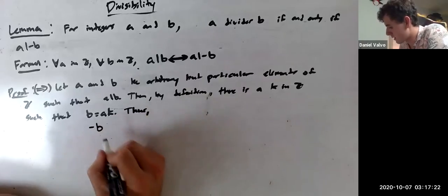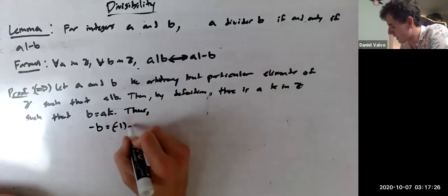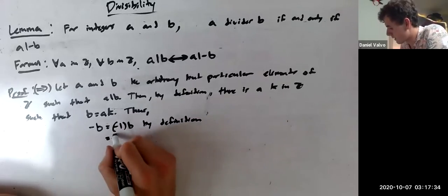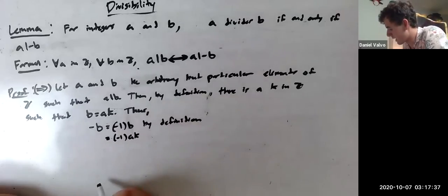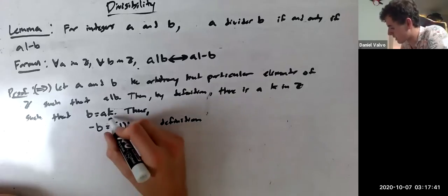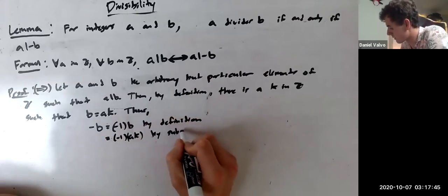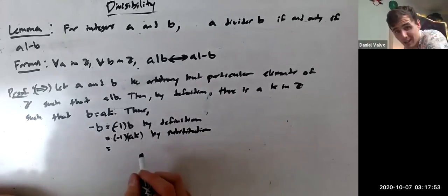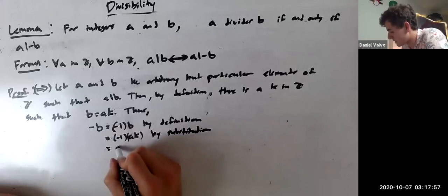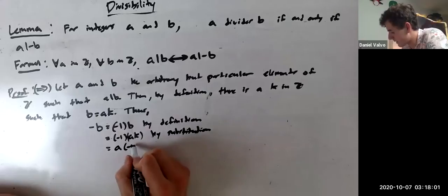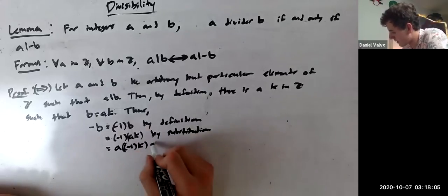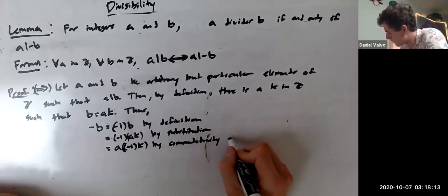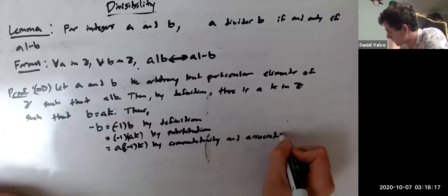So thus, negative B, which really means negative one times B by definition, is going to equal negative one times AK. We're substituting B for AK or AK for B. So this is by substitution. And then, by associativity, by commutativity and associativity, this is going to equal A times negative one times K.